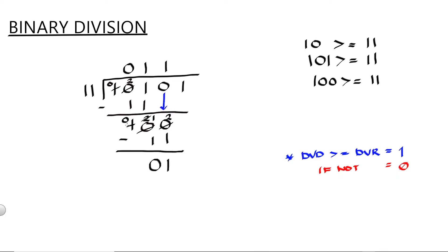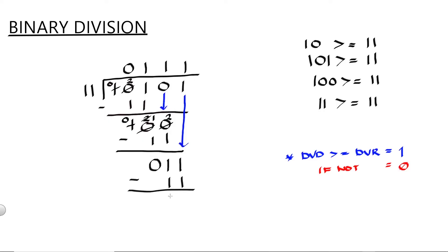And just ignore the 0. Next is to bring down this 1. Bring down 1 here, so this becomes 11. Is 11 greater than or equal to 11? The answer is yes. So this is 1, and 1 multiplied by 11 is equal to 11. Then proceed to subtraction. 11 minus 11 is equal to 0. So our answer is 0111, or 111.